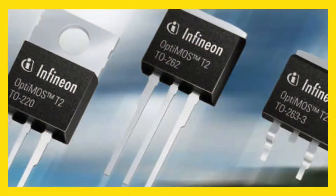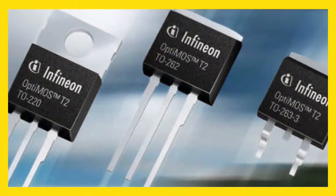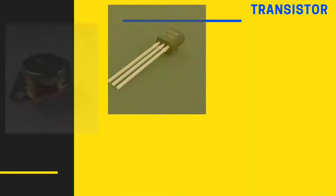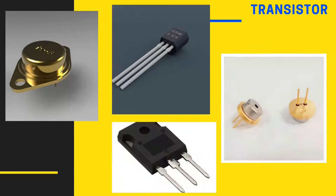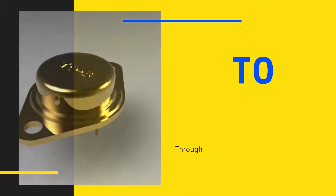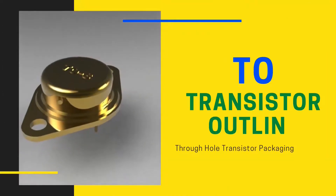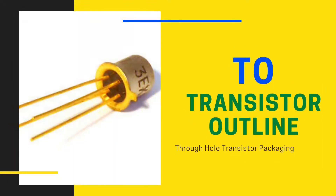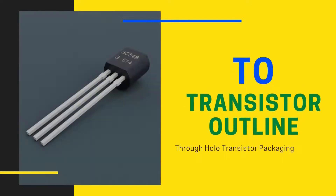The transistor outline package family consists of many types of packaging solutions for transistors and similar discrete devices, as well as simple ICs with low pin counts. TO stands for transistor outline. The structures of TO packages vary widely, from expensive metal can enclosures to low cost plastic molded bodies.